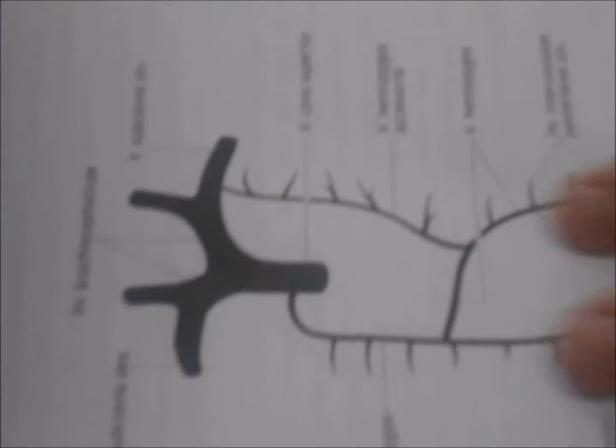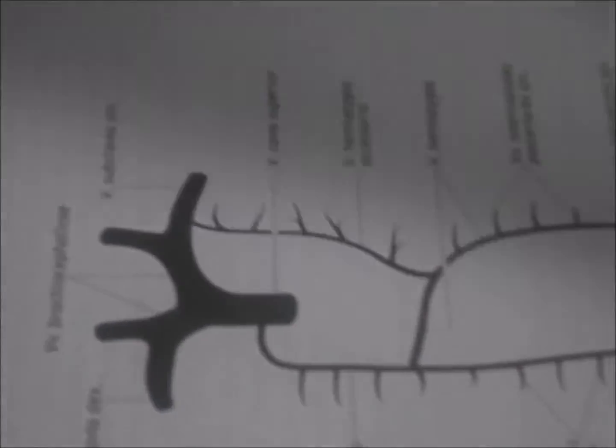Veins of the trunk. This is azygous, hemiazygous and hemiazygous. And system of inferior vena cava and portal veins. All and other veins.